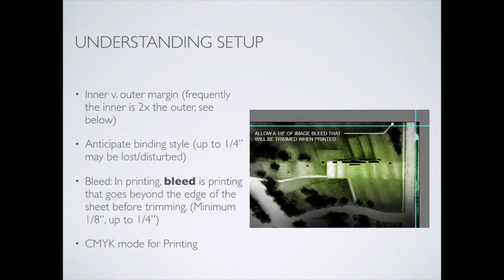Understanding the setup of a portfolio is a little different from other graphic design. The binding is a bit challenging — assuming you're printing it, you'd be binding it at a shop like FedEx Kinko's using a spiral or comb binding. When you use that kind of binding, you lose space in the center because of the holes punched in it. So you can't put really important content right in the center. Setting up the inner margin to be maybe double the outer margin is a better strategy — give yourself extra space in the center because of that binding.